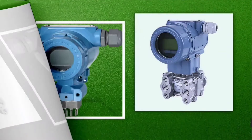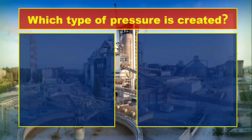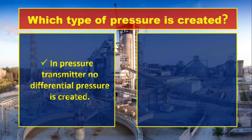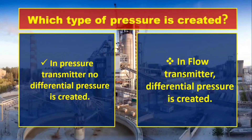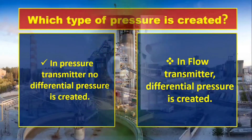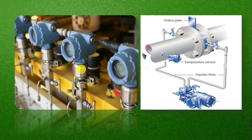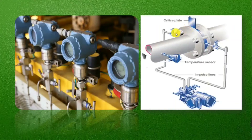The next comparison is: which type of pressure is created? No differential pressure is created in the pressure transmitter — only pressure is created. Whereas differential pressure is created in the flow transmitter. As shown in the right side image, this is the flow orifice plate, which creates differential pressure.